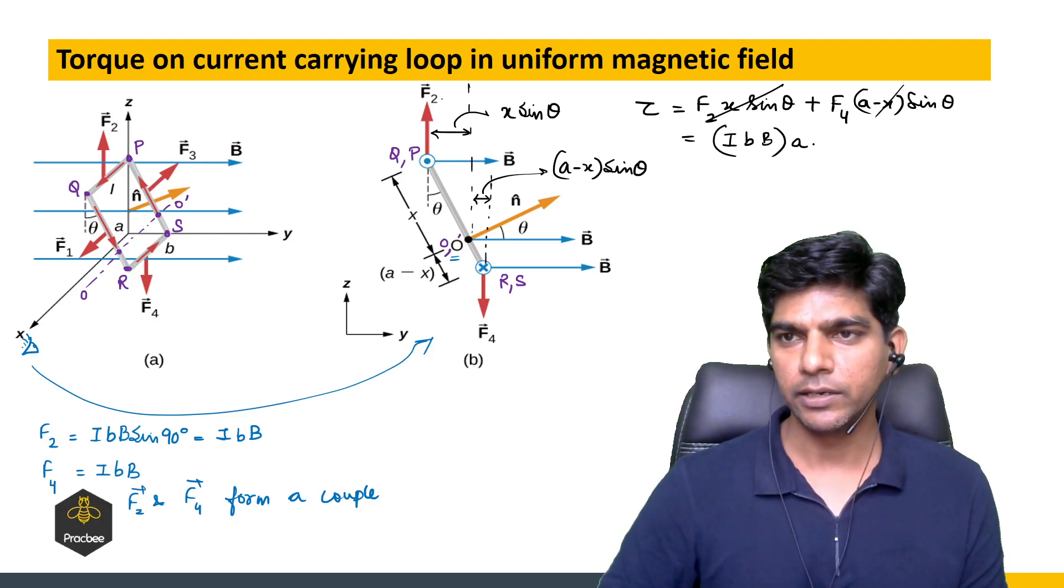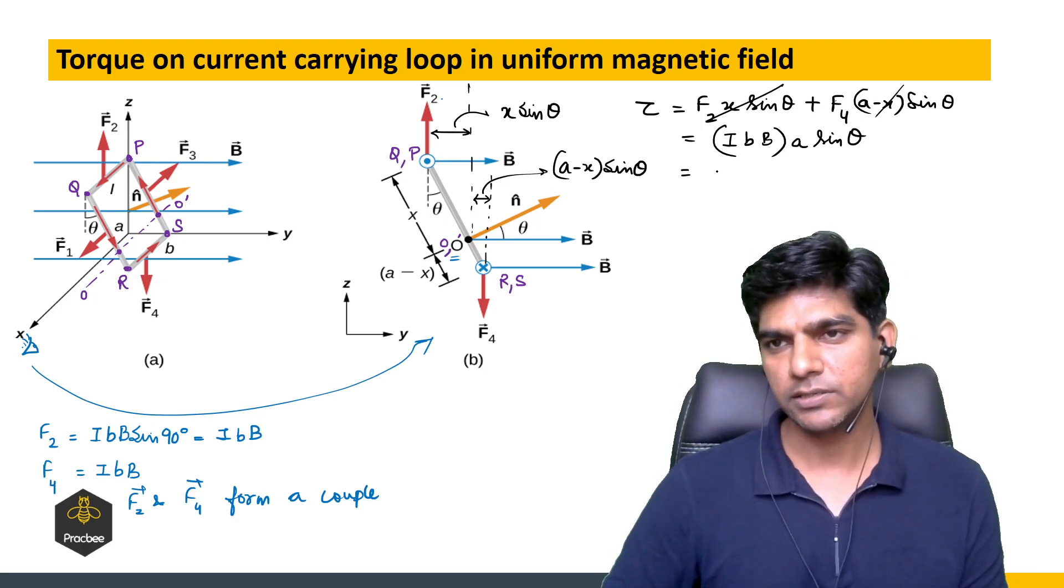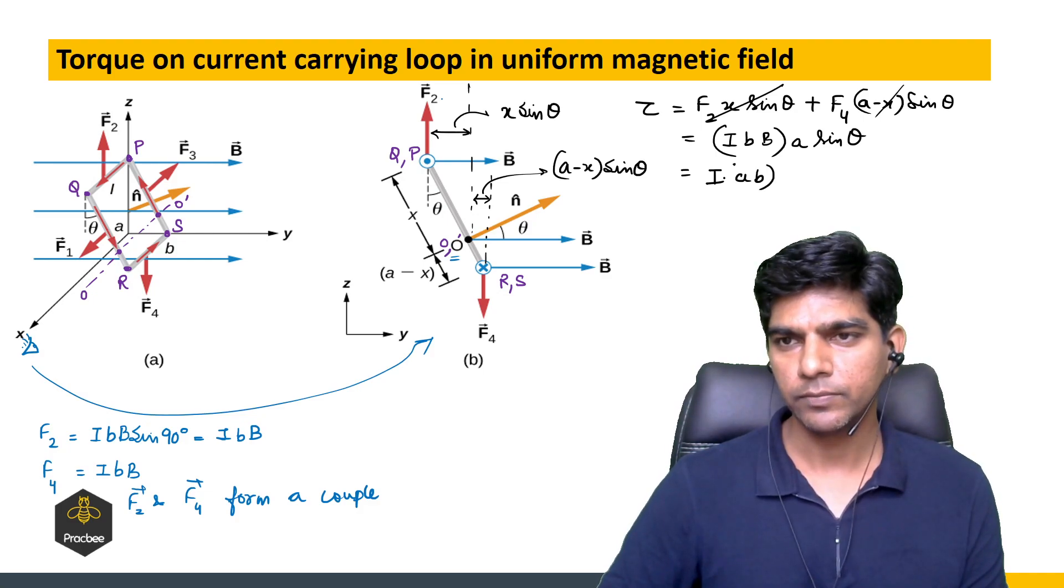Now let us rearrange this a bit. So let us write it like this: I A B times capital B sin theta.